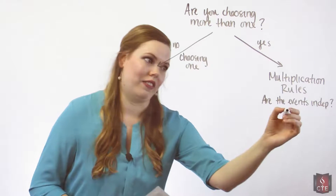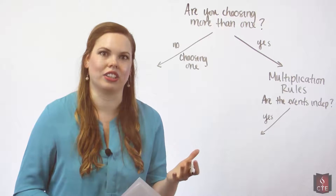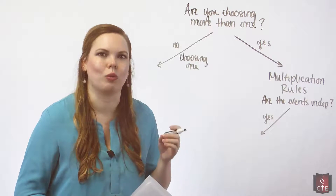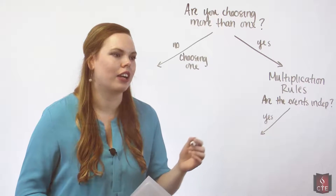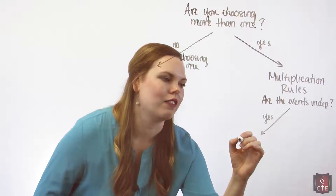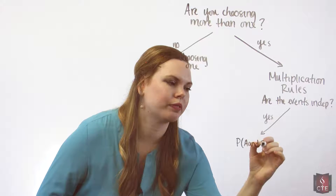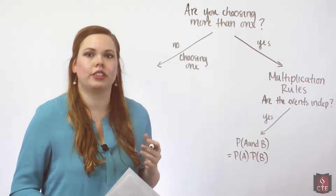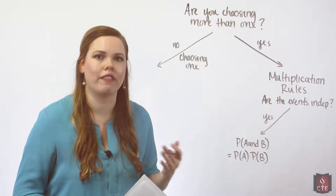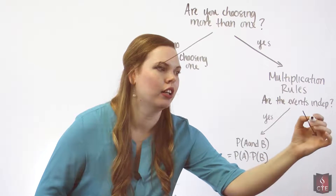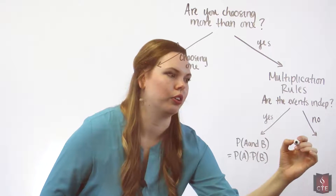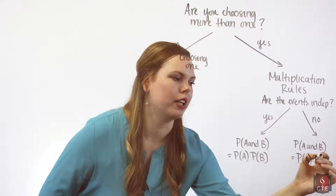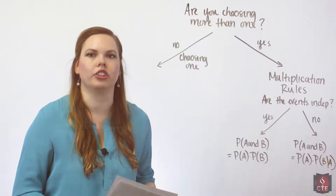Are the events independent? If yes, they have no effect on each other — like flipping coins or rolling dice, where the problem resets each time, or drawing cards with replacement. Then we use the multiplication rule for independent events: P(A and B) = P(A) × P(B). If no, they are not independent, we use the general multiplication rule: P(A) × P(B|A).